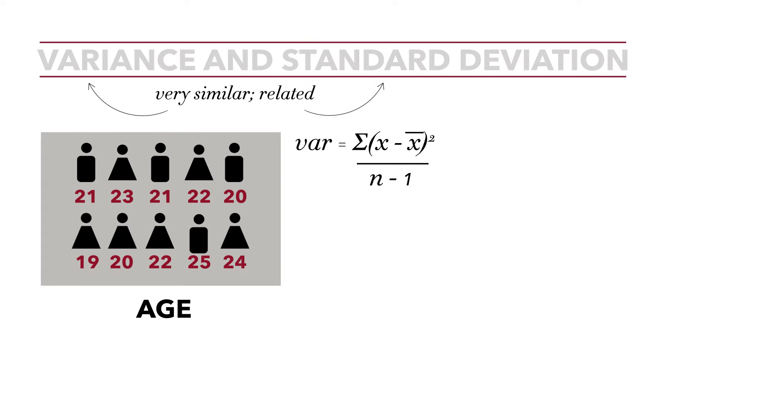So let's see how we do that. The formula again is the sum of each x minus the mean squared over n minus 1. So we first need to calculate the mean. To calculate that mean, just like we calculate any mean: 21 plus 23 plus 21 plus 22 plus 20 plus 19 plus 20 plus 22 plus 25 plus 24. If we sum those, we see that it equals 217 divided by 10 equals 21.7. The mean for these data is 21.7, the exact same mean we calculated in the tutorial covering the mean.